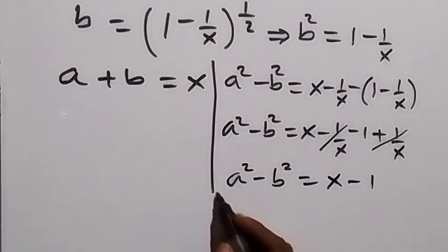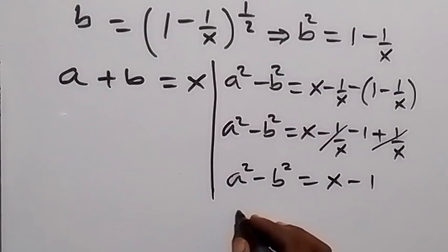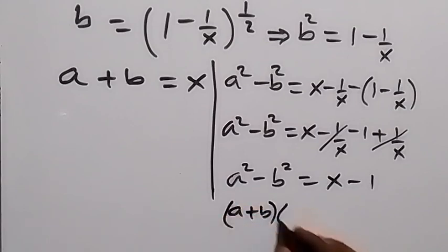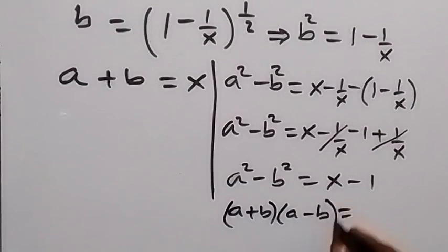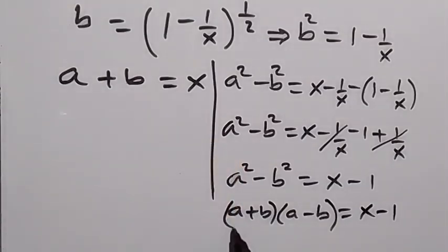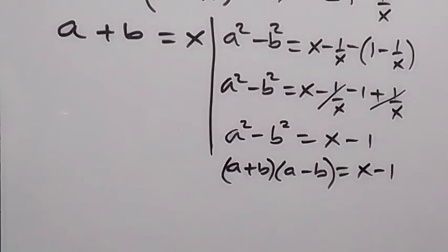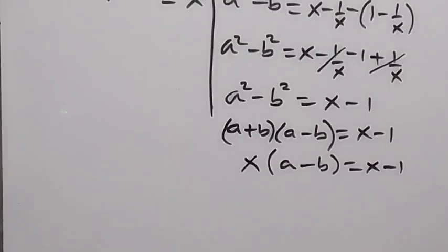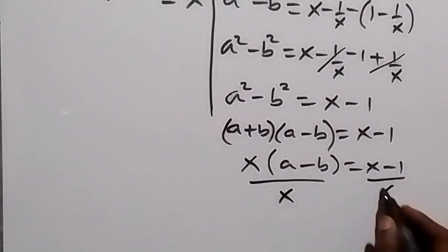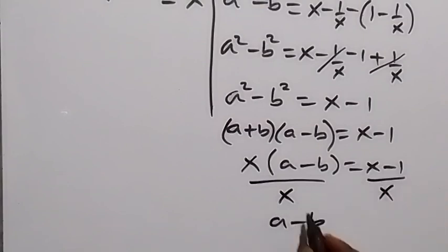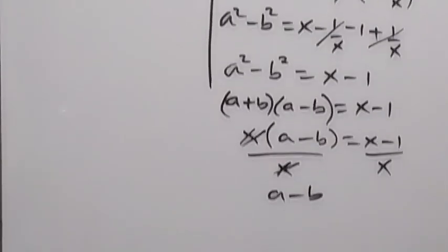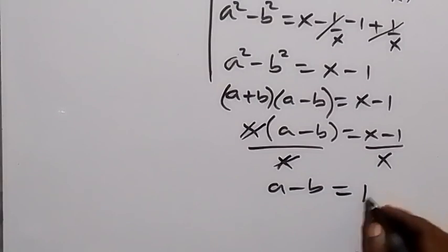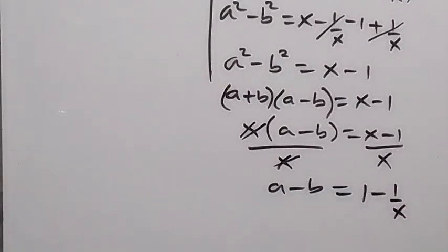We have a perfect difference of two squares, which we can write as (a plus b)(a minus b) equals x minus 1. We already have a plus b equals x, so we substitute x in place of (a plus b). This gives us x times (a minus b) equals x minus 1. Dividing both sides by x, a minus b equals (x minus 1) over x.